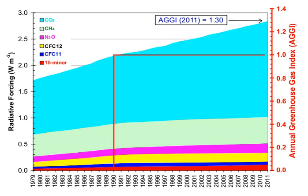A greenhouse gas is a gas that absorbs and emits radiant energy within the thermal infrared range. Greenhouse gases cause the greenhouse effect. The primary greenhouse gases in Earth's atmosphere are water vapor, carbon dioxide, methane, nitrous oxide, and ozone.